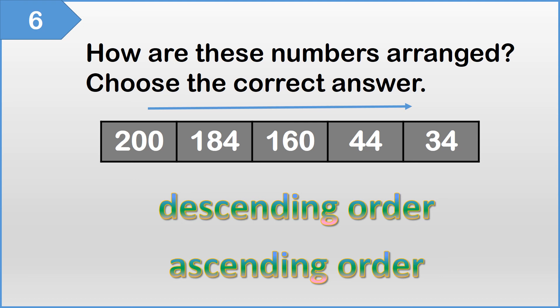200, 184, 160, 44, then 34. That's correct — descending order.